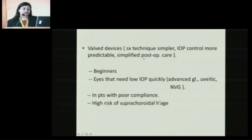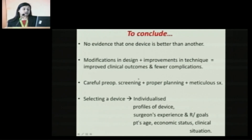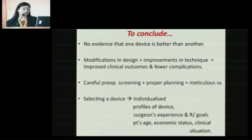Valve devices are technically simpler surgically, IOP control is earlier and predictable, and they can be tried for beginners — when you don't need to isolate the muscles and surgery is easier. They are preferred in eyes that need quick IOP lowering, in patients with poor compliance, and when you want to avoid the risk of hypotony as in high-risk cases of suprachoroidal hemorrhage. To conclude, there is no evidence that one device is better than another. Modifications in technique and design are continuously happening, leading to improved clinical outcomes and fewer complications. Careful pre-operative screening, proper planning, and meticulous surgery are essential. Selecting a device should be individualized based on the device profile, your own experience, treatment goals, the patient's age, economic status, and the overall clinical situation.